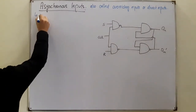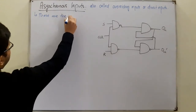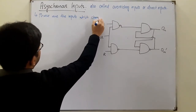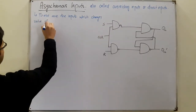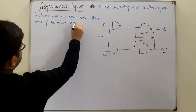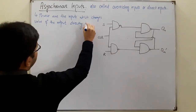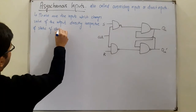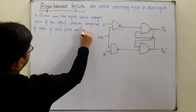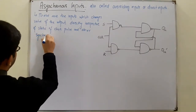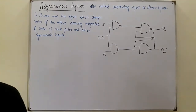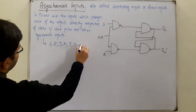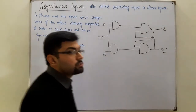These are the inputs which change the value of the output directly when they are applied, irrespective of the status of the clock pulse and other synchronous inputs. Now, what are these synchronous inputs? These are the general inputs that we have been discussing till now — S, R, J, K, T, D, etc.